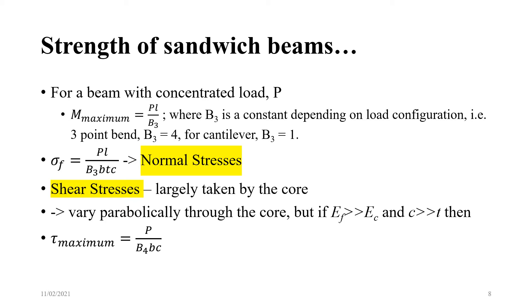For a beam with concentrated load P, the maximum bending moment is PL / B3, where B3 is a constant. For three-point bending, B3 = 4; for a cantilever, B3 = 1, giving PL/4 or PL respectively. Incorporating B3 back into the expression, the normal stress in the face takes the form: sigma_F = PL / (B3·B·T·C).